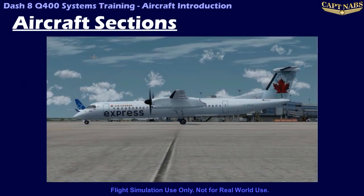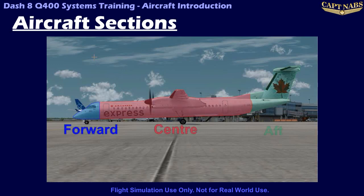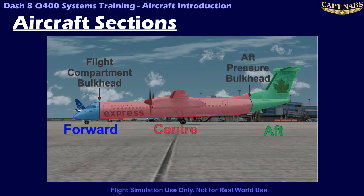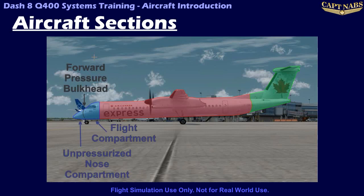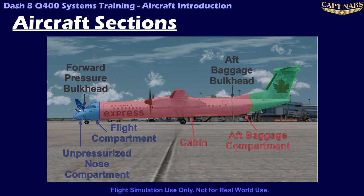The following aircraft sections may be referenced in future lessons, so it is important to be aware of their definition. The aircraft can be divided into a forward, center, and aft section. The forward section extends from the flight compartment aft bulkhead forward. The aft section extends from the aft pressure dome rearward. The center section is the area in between. The forward section contains the unpressurized nose compartment and the pressurized flight compartment, separated by the forward pressure bulkhead. The center section contains the cabin and aft baggage compartment. The aft section contains the unpressurized tail and empennage.